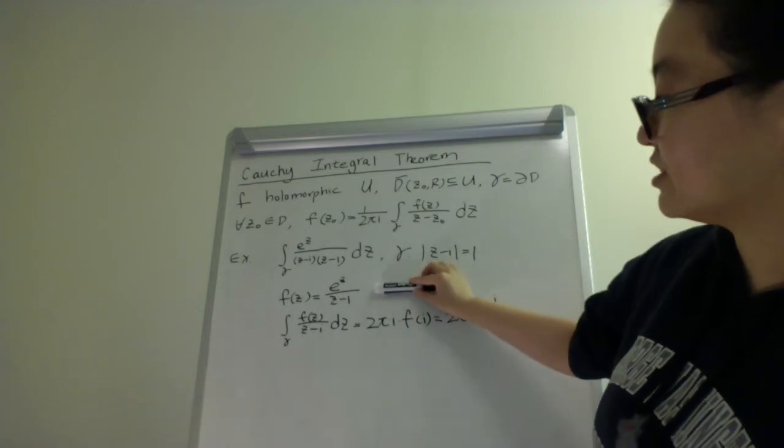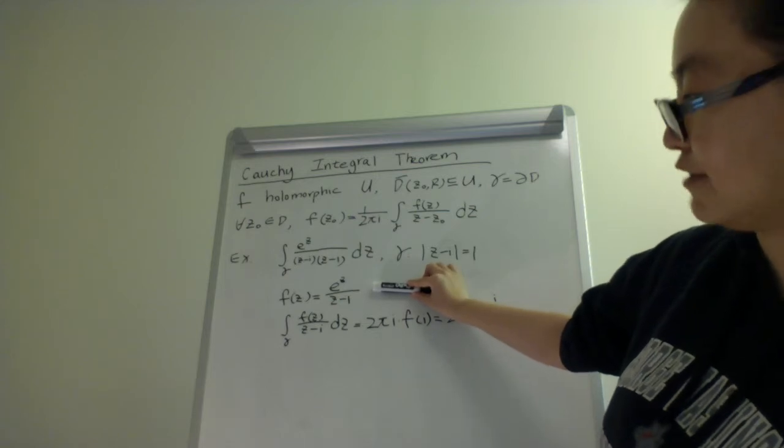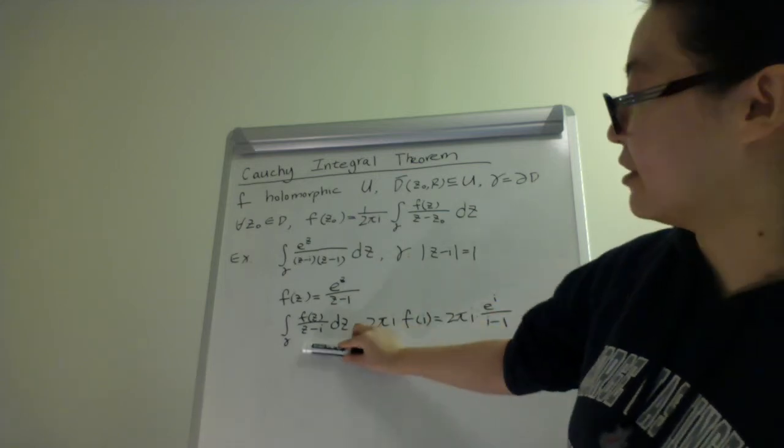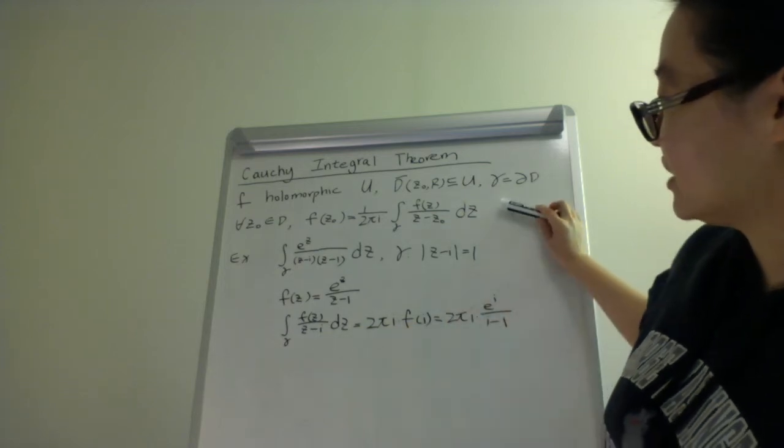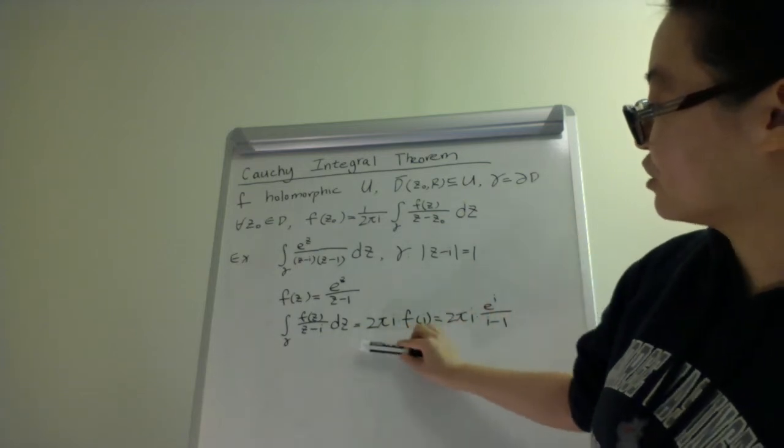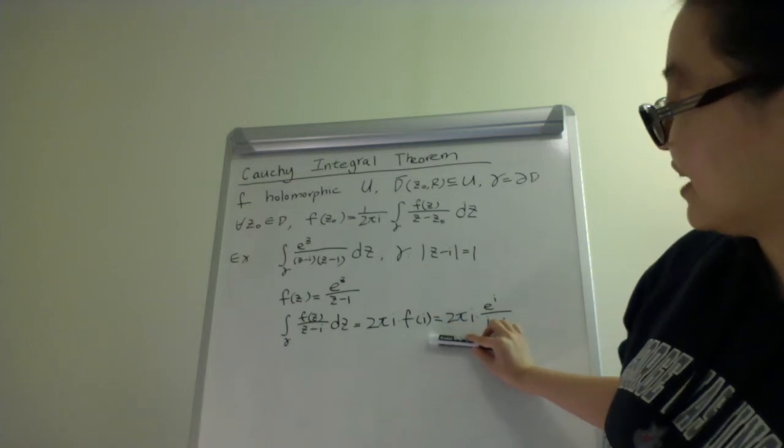First, we observe that e to the z over z minus 1 is holomorphic on gamma, so we let that be the function f of z, and rewrite the integral as f of z over z minus z dz. Using the Cauchy Integral Theorem, that integral equals 2 pi i times f of i, which naturally leads to the final result,